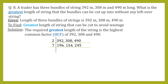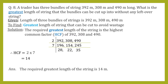Now 196, 154, and 245 are all multiples of 7, so we apply table of 7: 7×28=196, 7×22=154, 7×35=245. We are left with 28, 22, and 35. These do not have any common divisor, so we stop factorizing. Therefore HCF equals the product of numbers on the left: 2 into 7 equals 14. The required greatest length of the string is 14 meters.